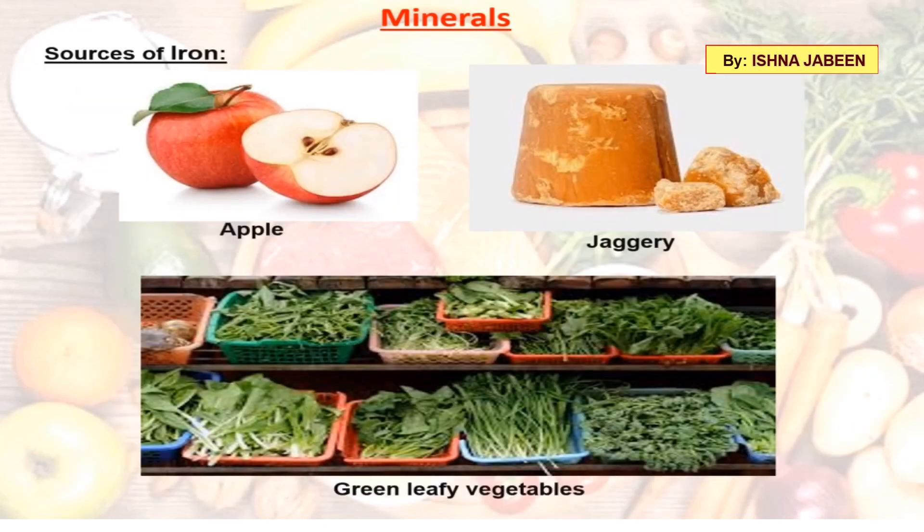Iron helps in the formation of hemoglobin present in red blood cells, which carry oxygen around the body. Sources include apple, jaggery, and green leafy vegetables.